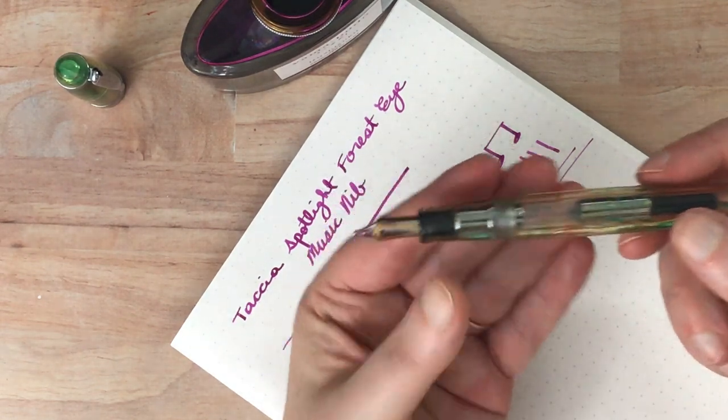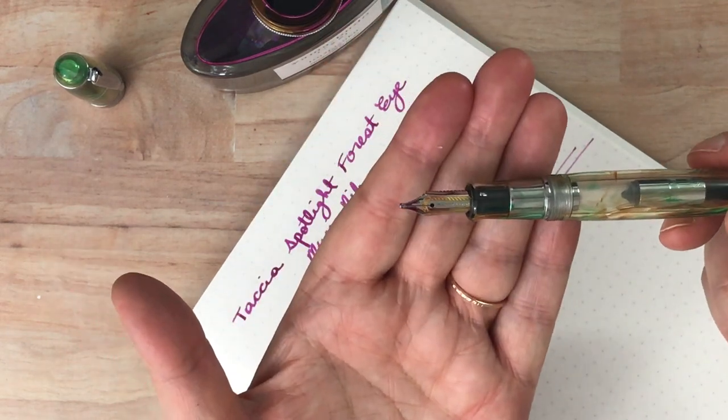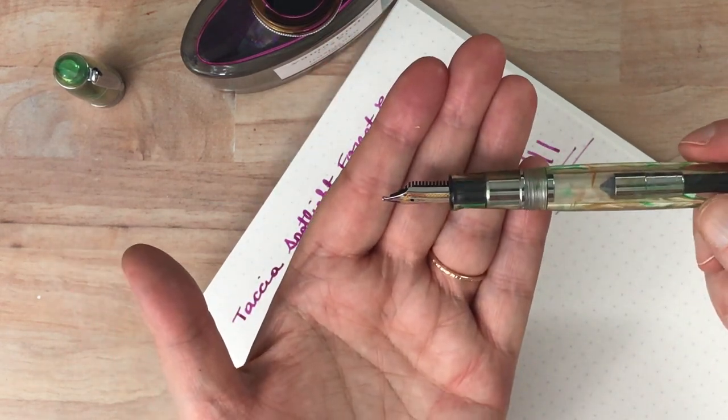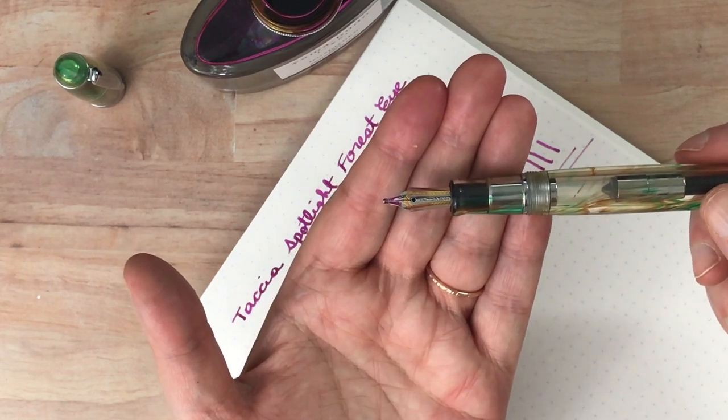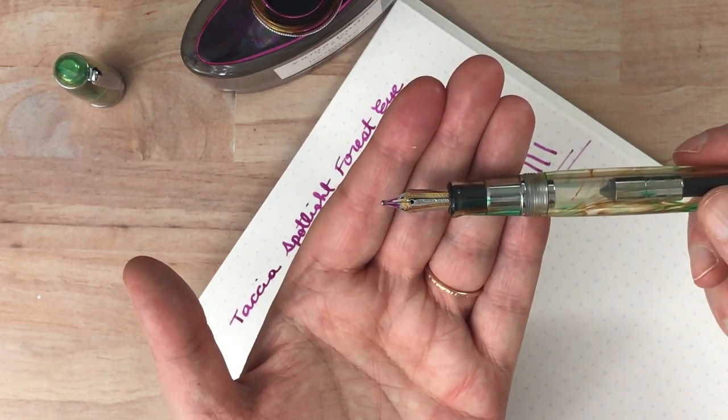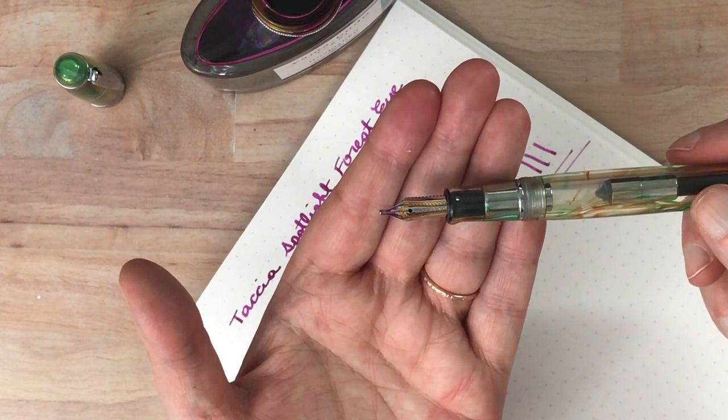And I have never tried sort of the next level up steel nib from Sailor. I do have a couple of 1911 Junior pens, which I think are now being branded in the US as compass. They're calling them the Sailor compass.